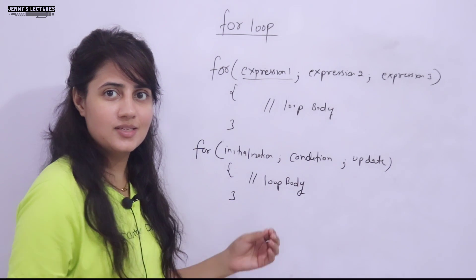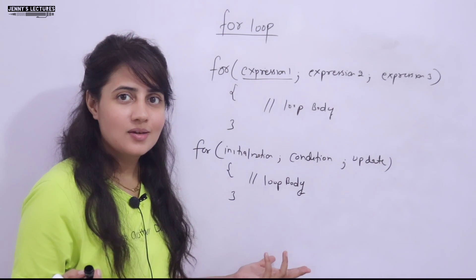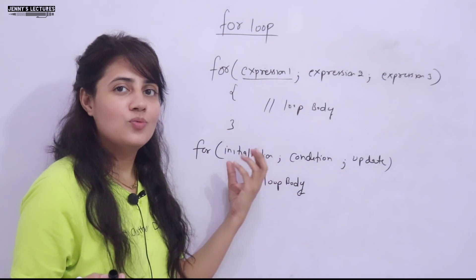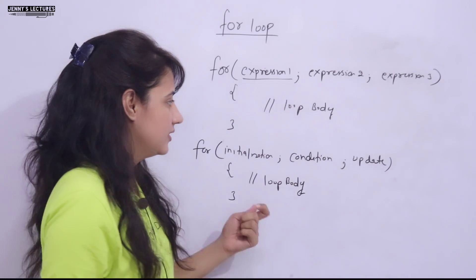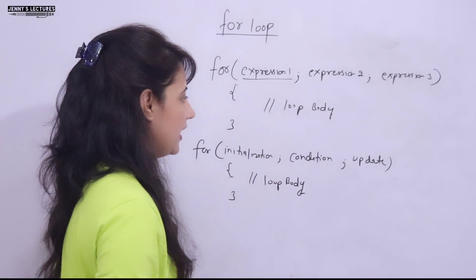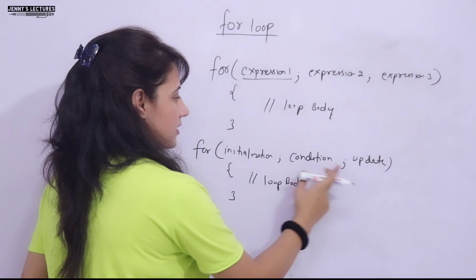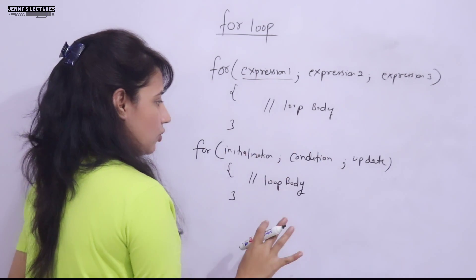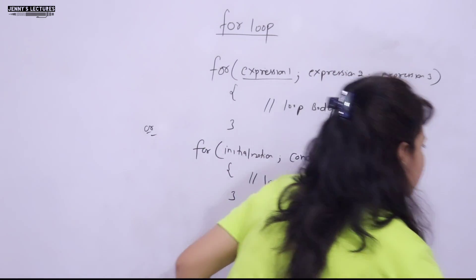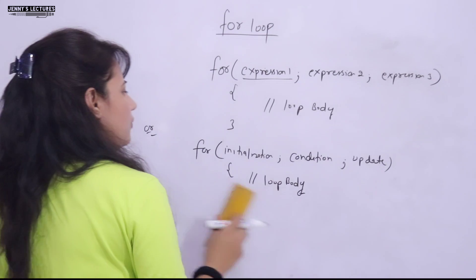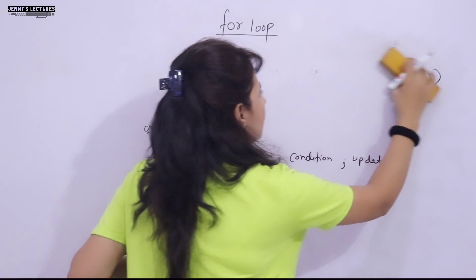This is the general syntax of the for loop. Now let's discuss the working of the for loop with the help of a program. Take note: these two are semicolons. Let's take a simple example.